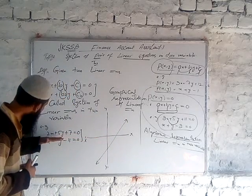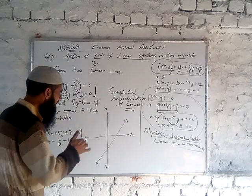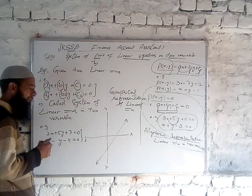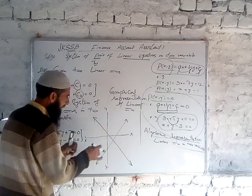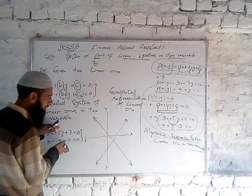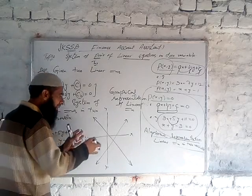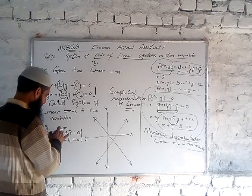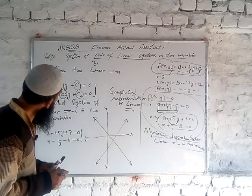Geometrically, corresponding to these two linear equations, we get two straight lines in the same plane. Each linear equation represents one straight line. So if we have two linear equations, we get two straight lines in the plane, and vice versa.